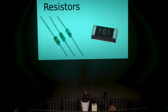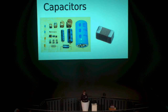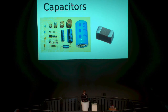Resistors look like either bigger components with legs and colored marks, or tiny black rectangles with numbers on them. The colors and numbers indicate the values of the resistors, not part numbers. Capacitors hold charge — they range from really big electrolytic capacitors to tiny ceramic surface mount components.